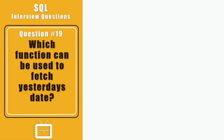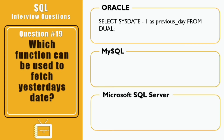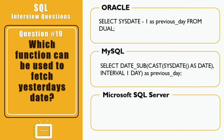Question nineteen: which function can be used to fetch yesterday's date? Different RDBMS have different date functions to add or subtract a day value from the current date. In Oracle, we can simply subtract an integer from the date value — no special function is needed. SYSDATE returns today's date, so SYSDATE minus 1 gives yesterday's date. In MySQL, SYSDATE returns today's date along with the timestamp value.